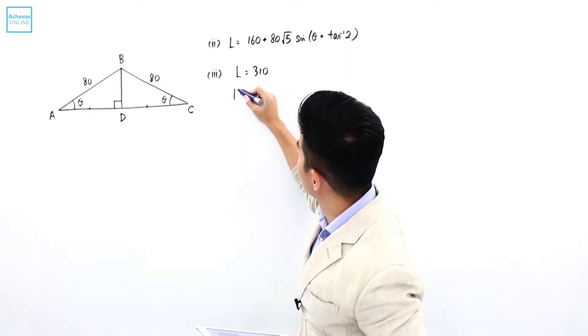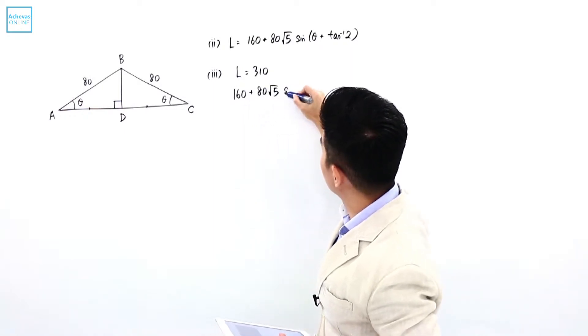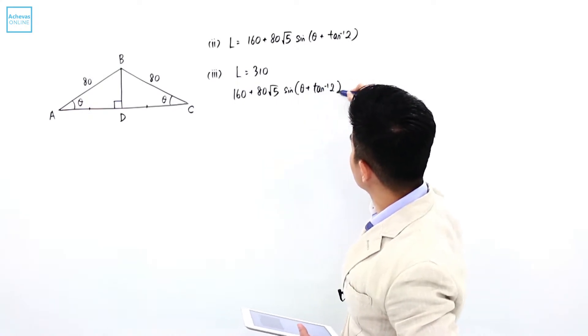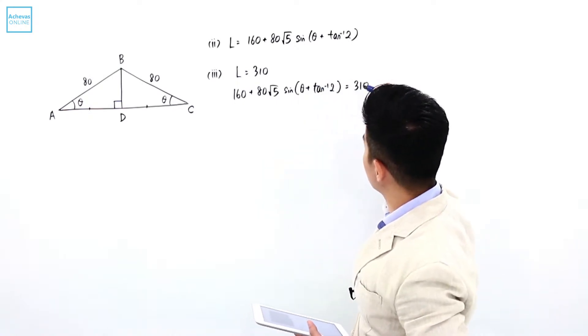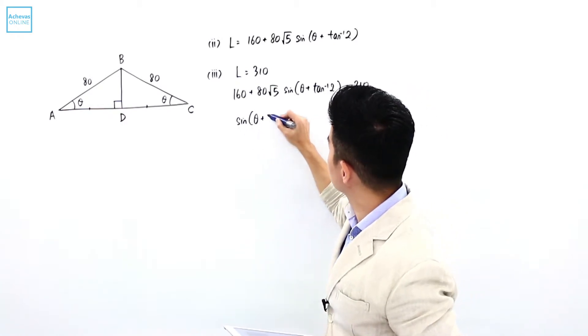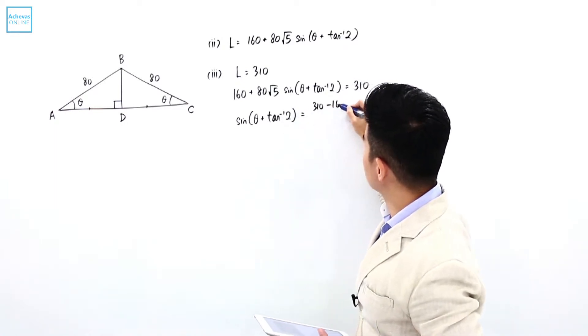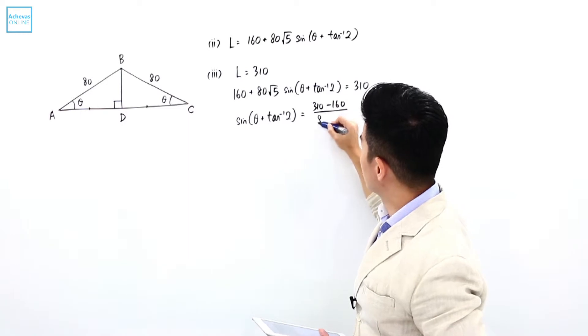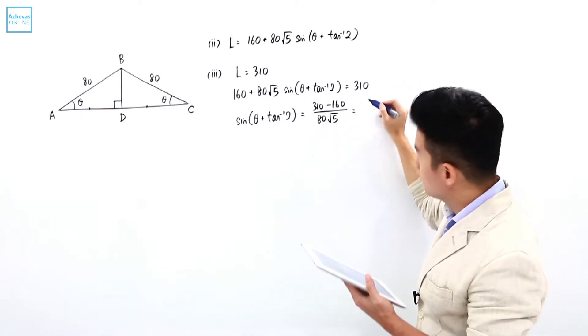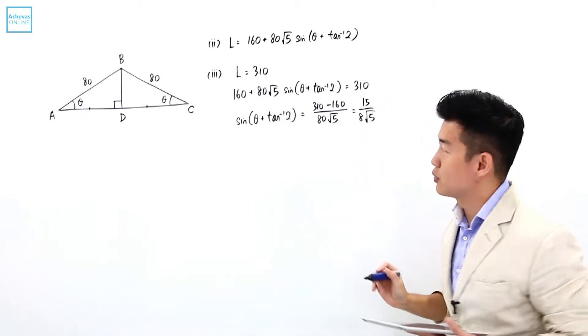That means using part 2, 160 plus 80 square root of 5 sine of theta plus tangent inverse of 2 is equal to 310, which means that sine of theta plus tangent inverse of 2 is going to be 310 minus 160 divided by 80 square root of 5, which is equal to 15 over 8 square root of 5.